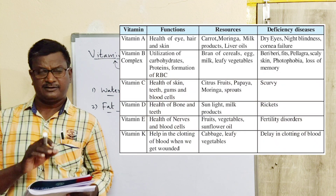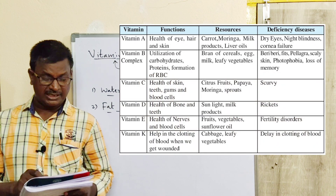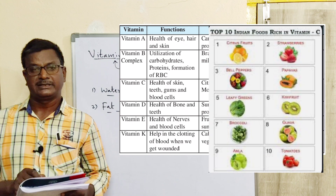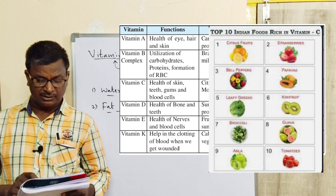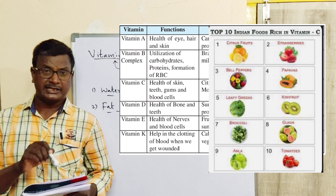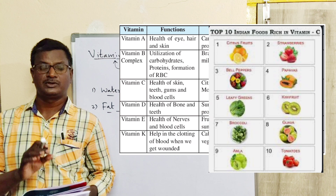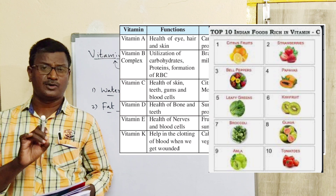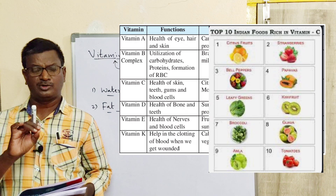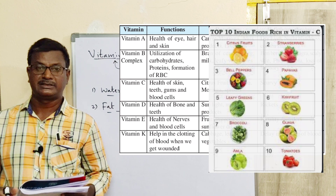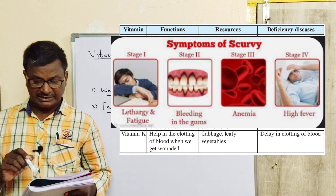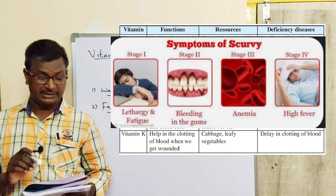Next, vitamin C. Functions: health of skin, teeth, gums, and blood cells. Sources: citrus fruits, papaya, moringa, and sprouts. Citrus fruits like lemon, orange, and guava — these sour-tasting fruits are rich sources of vitamin C. Deficiency of vitamin C causes scurvy disease.